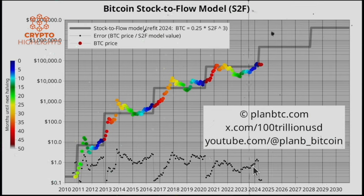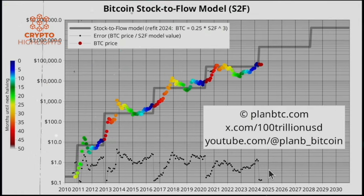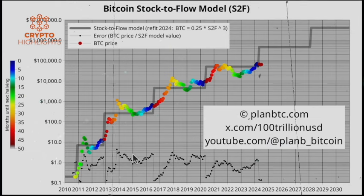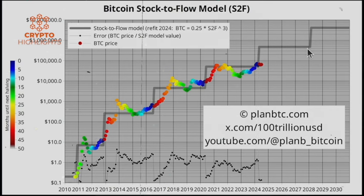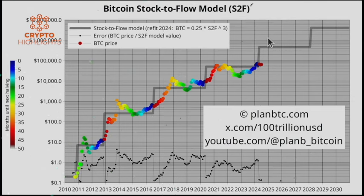Most people, because of recency bias, think this cycle will be below the model line again — very understandable. However, there's as much chance the price will be above the model line again, like in earlier periods. The model line for the next period is around 500,000. Normally we would go 2x over that and 2x below that, so that's 1,000,000 or 250,000 — that would be the normal range around the model line at the beginning of a bull market.